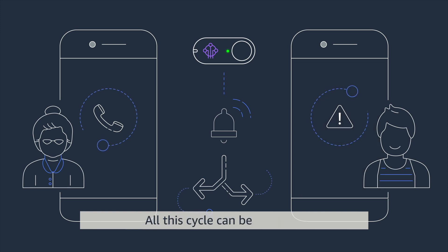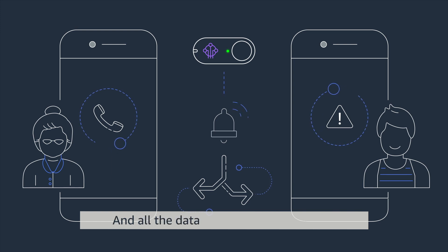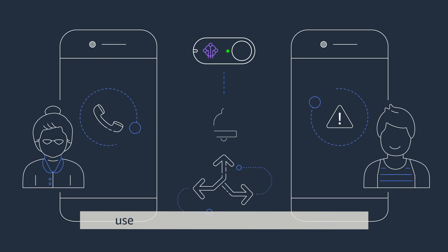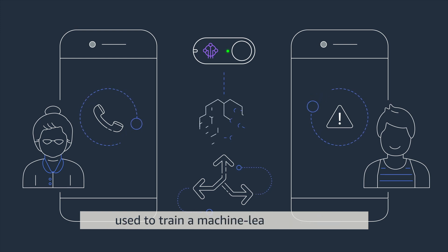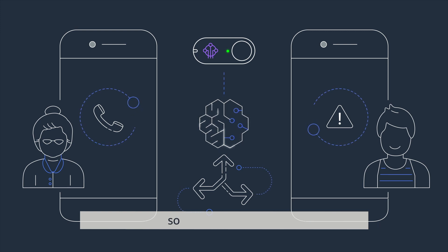All this cycle can be repeated until the alarm has been deactivated. All the data from these activations is going to be stored, enriched, and later used to train a machine learning model. This model will try to predict when my grandma is going to press the button again so we can anticipate.